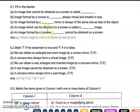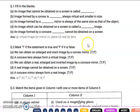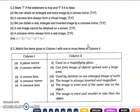These are your fill in the blanks. Now our next part is true and false. Mark T if the statement is true, mark F if the statement is false. We can obtain an enlarged and erect image by a convex mirror - is this true or false? No, this is false.